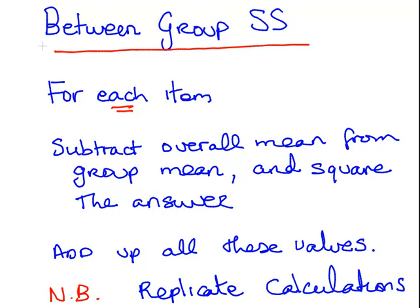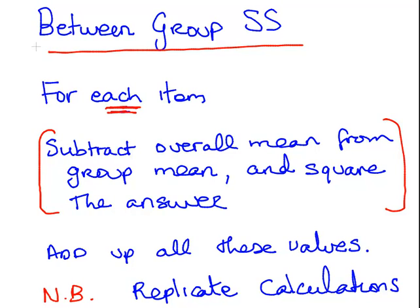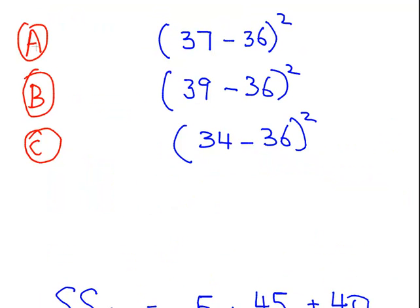Now this is important. So for each item, for each individual measurement, what we are going to do is this calculation: subtract the overall mean from the group mean for each item and square the answer. And then we are going to add up all of these values. Now the thing about this calculation is that there is quite a lot of replicate measurements so that you can actually double up very quickly.